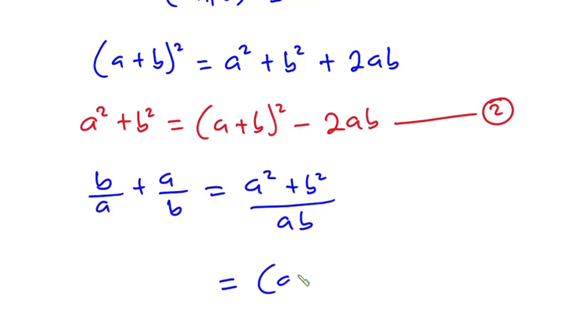So we have a plus b squared minus 2ab, all divided by ab.